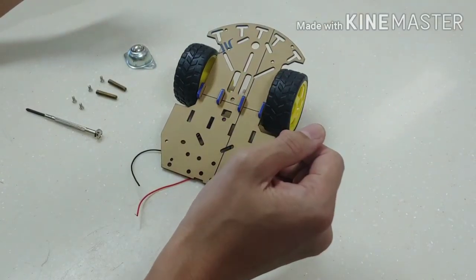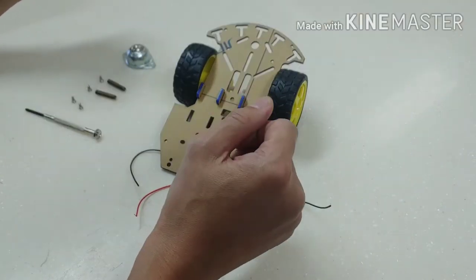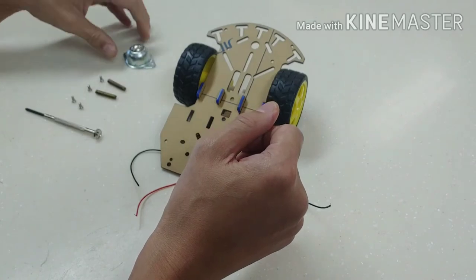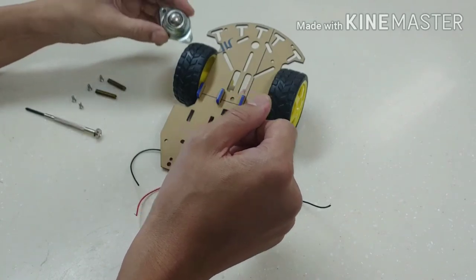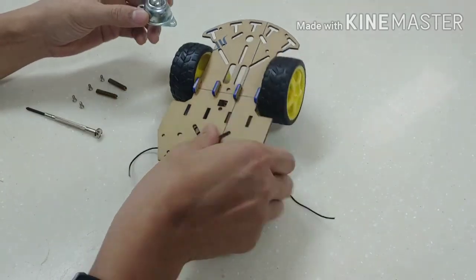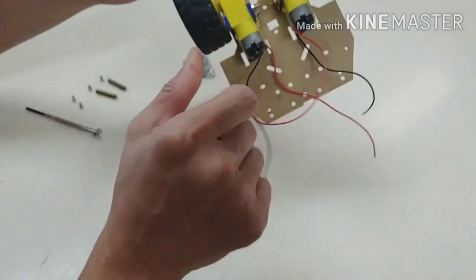This is the next part of the fix up and we will be fixing up the guide wheel. You need to take this out, you need to take your chassis with the two motors and the wheels attached.